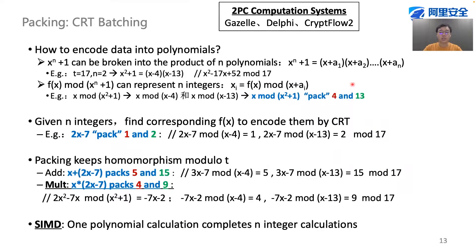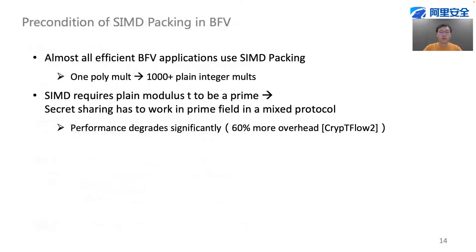Most 2PC computation systems, such as Gazelle, Delphi, and CryptoFlow2, use a technique called CRT batching. Due to limited time, I'm not going to introduce the details of this technique, but the idea is that a vector of integer values can be packed into a polynomial. And most importantly, it provides the effect of single instruction on multiple data.